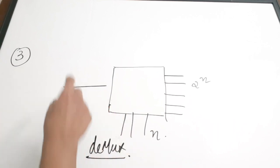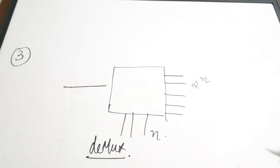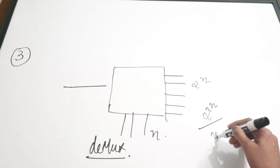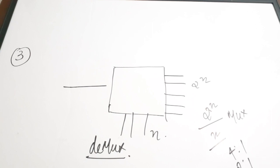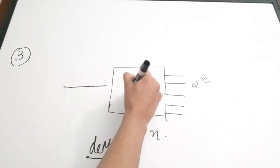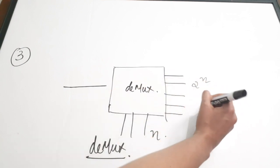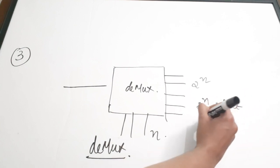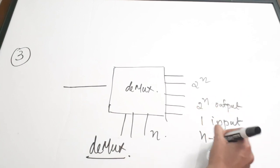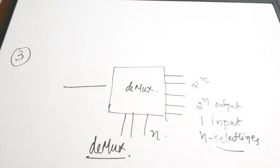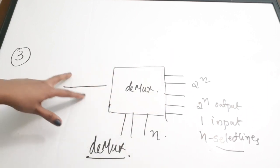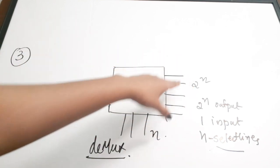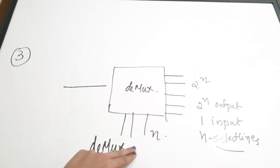A multiplexer combines signals — it has 2^n input lines and n select lines. For example, a 4-to-1 mux has four inputs, two select lines, and one output. A DMUX, on the other hand, has one input, 2^n output lines, and n select lines, used to demultiplex a combined signal.